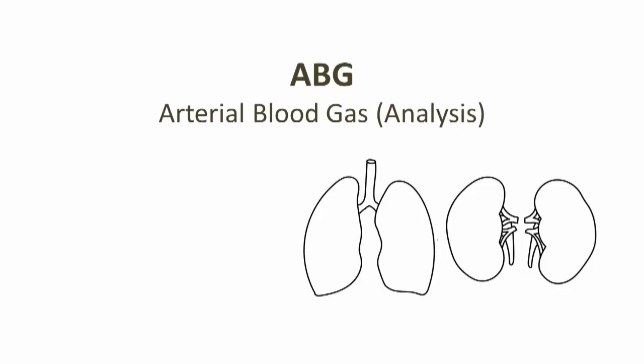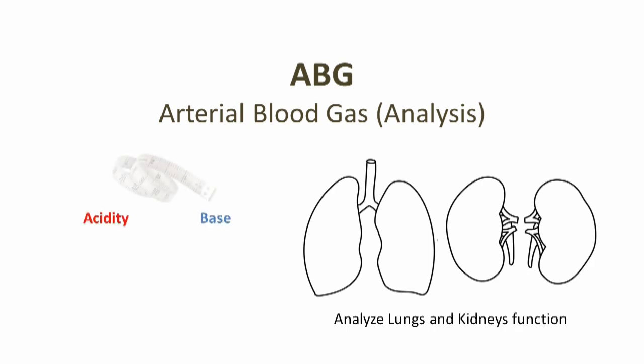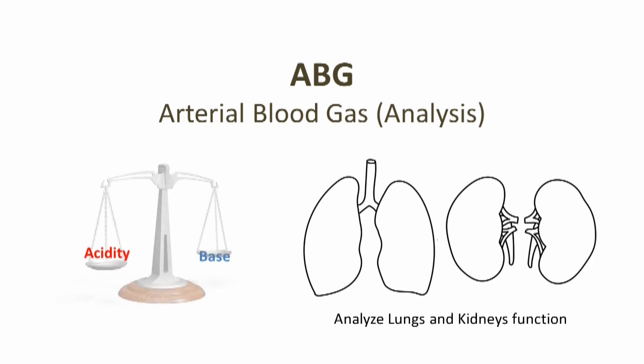Through ABG we can analyze lung and kidney function by measuring acid and base level composition. These are usually balanced when a person is healthy. Now let's look at some of the terminology and normal values to analyze ABG.